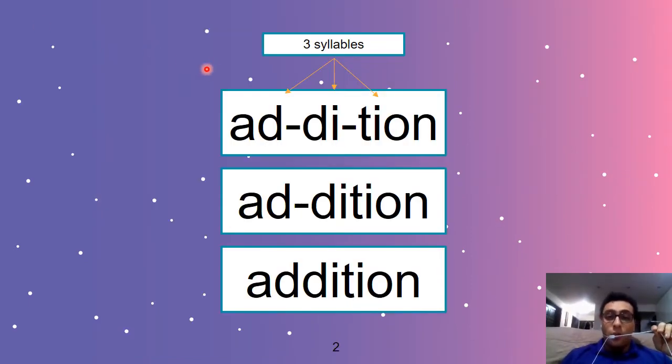As you remember, we learned that addition has three syllables. Addition. Addition. Addition. So when we say addition, we have to say it correctly. We cannot say addition. It's addition.